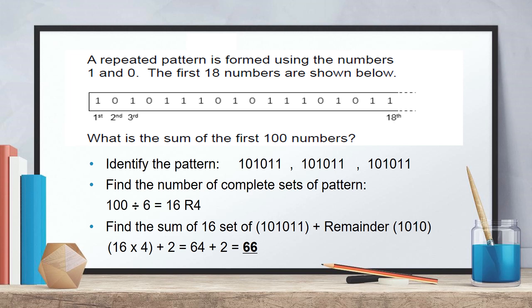Next, they need to find the number of complete sets of patterns. Because we have 100 numbers, so how many groups of 6 are there? There are 16 and remainder 4. So in order to find the sum of the 16 sets, it is basically 16 times 4. But because there are remainder of 4, so in the first 4 digits of the pattern, we should have 1 0 1 0, which is another 2. So all together, there are 66.